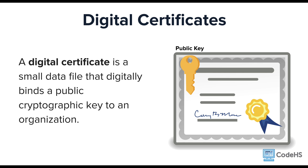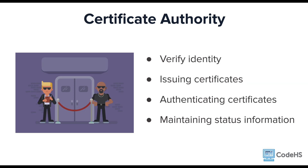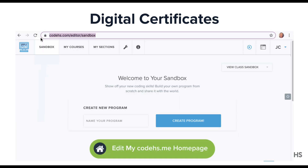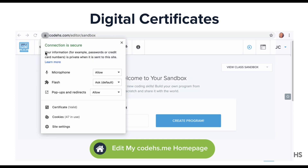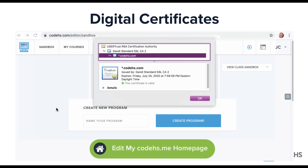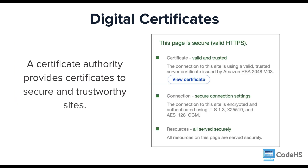Just as you would show your ID to prove who you are, a website shows its digital certificate to a certificate authority who validates the public key. The role of this certificate authority is to make sure the site is legitimate. If it is, then the site will be issued a certificate. Certificate authorities are also responsible for authenticating certificates and maintaining status information such as when the certificate expires. Browsers check sites for valid security certificates automatically, and security certificates are used to verify that a site can be trusted.